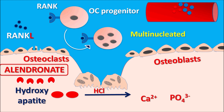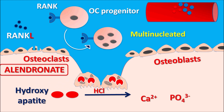Alendronate acts as an anti-resorptive agent. It is selectively accumulated in osteoclast cells and inhibits their activity. It also inhibits the dissolution of hydroxyapatite, thereby inhibiting the release of calcium and phosphate ions. This improves bone strength on long-term treatment. However, since alendronate is incorporated within the bone mass, continuous administration is required in order to maintain anti-resorptive activity.